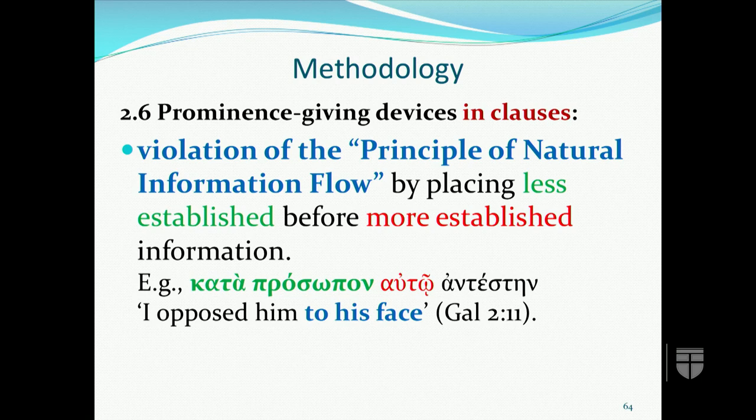Another prominence device is the violation of the principle of natural information flow, by placing less established information before more established information — for example, the focal constituent 'kata prosōpon' in the P2 position (which traditional grammar would call emphasis) is non-established information but is followed immediately by the pronoun 'autō,' creating a stark transition from the most important to the most established information.